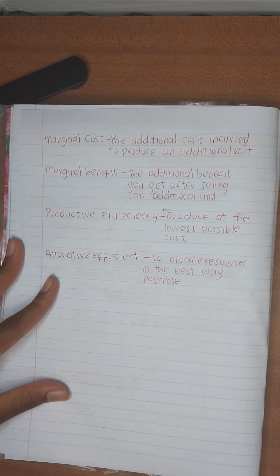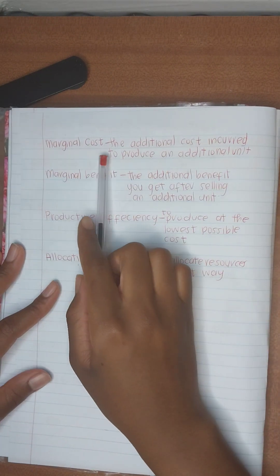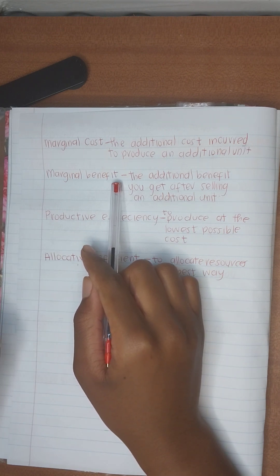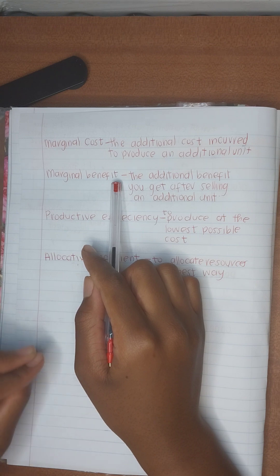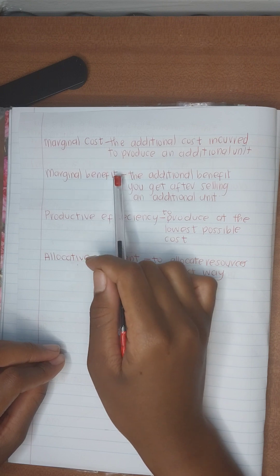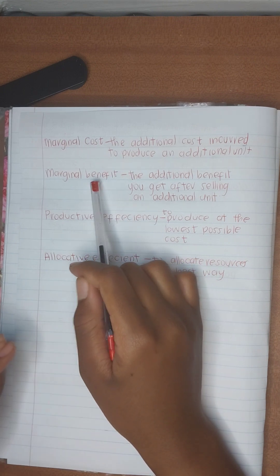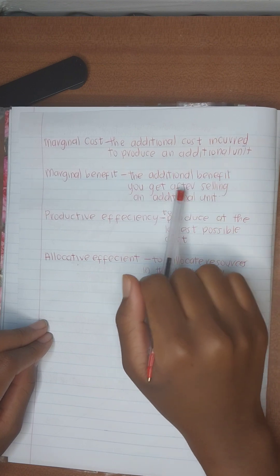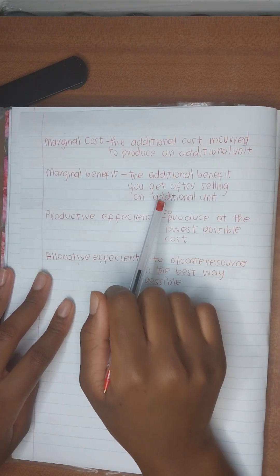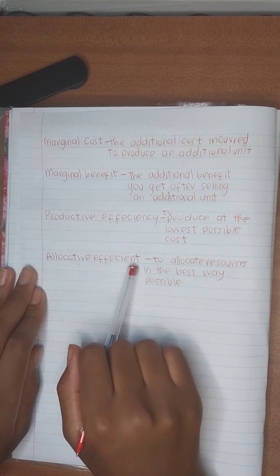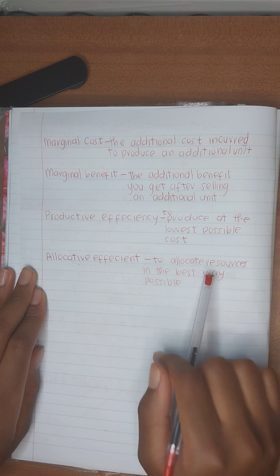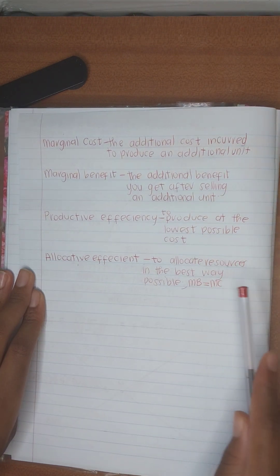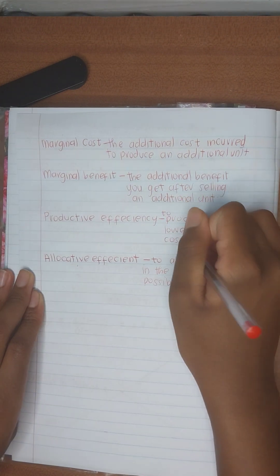Finally, some key definitions. Marginal cost is a curve that shows you the additional cost incurred to produce one additional unit. Marginal benefit is the additional benefit you get after selling an additional unit. Productive efficiency means producing at the lowest possible cost — that is, any point on the PPC. Allocative efficiency, on the other hand, means allocating resources in the best possible way — that is the point where MB equals MC.